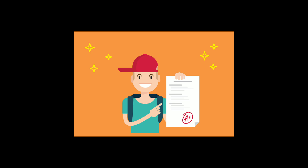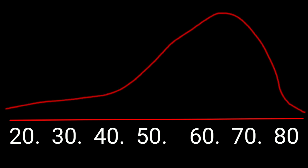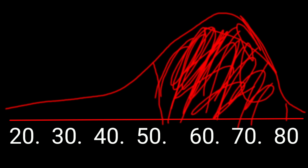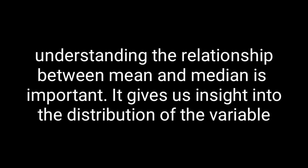For negative skewness, consider marks scored by students ranging from 20 to 80. In this case, the majority of students scored between 50 and 80, with a central value around 50. We see a tail on the left side of the central value. Because its tail is on the left side, it is called negative skewness.